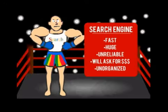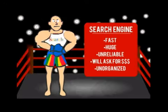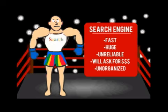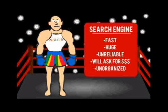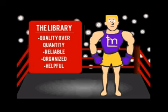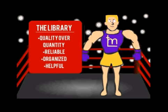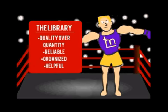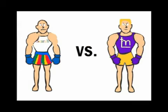In one corner, we have the search engine: fast, huge, unreliable, will ask you for money, and very unorganized. In the other corner, the library: quality over quantity, reliable, organized, and helpful. Let's take a look at these two competitors more closely.